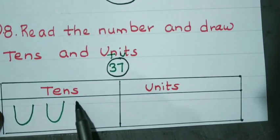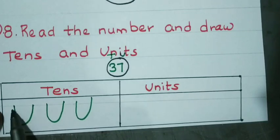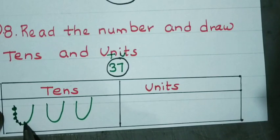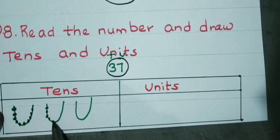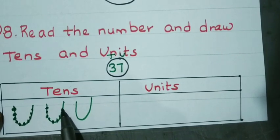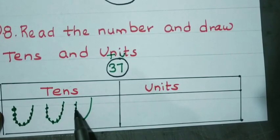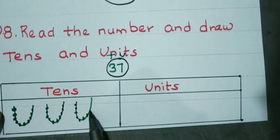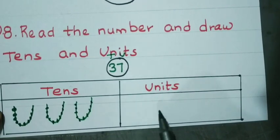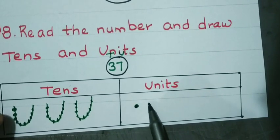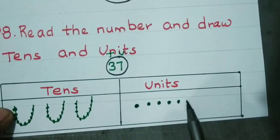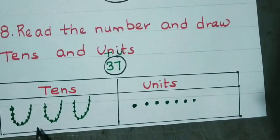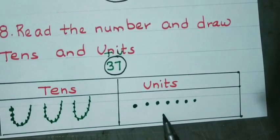In each necklace, place 10 beads: count 1 through 10 for each of the 3 necklaces. Then draw 7 units: 1, 2, 3, 4, 5, 6, 7. So the drawing shows 3 tens and 7 units.